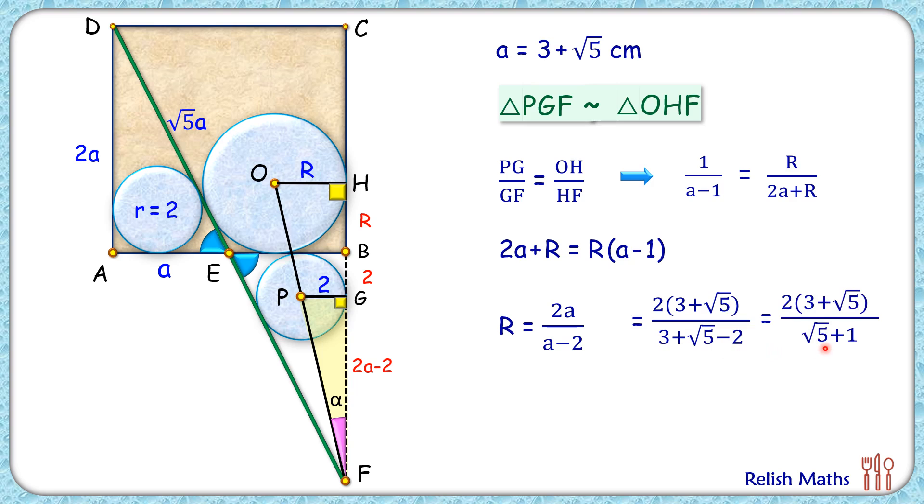Simplifying the denominator to get this. Now here, rationalizing the denominator, we'll get the value of R as √5 + 1 centimeters, which is nothing but 3.24 centimeters, and that's our answer. I hope you enjoyed the solution. I will see you in the next video. Till then, tata, bye bye.